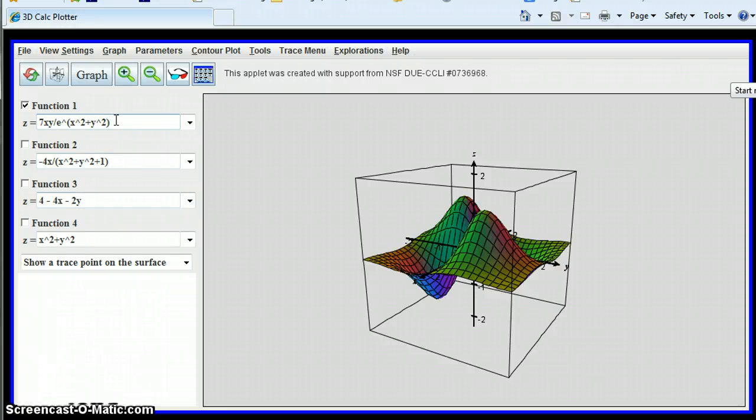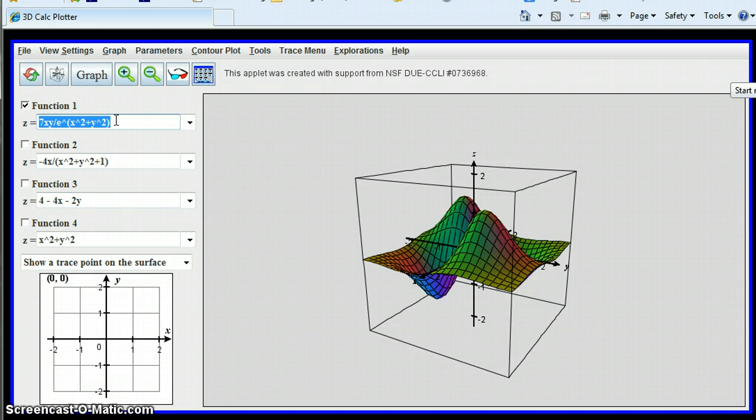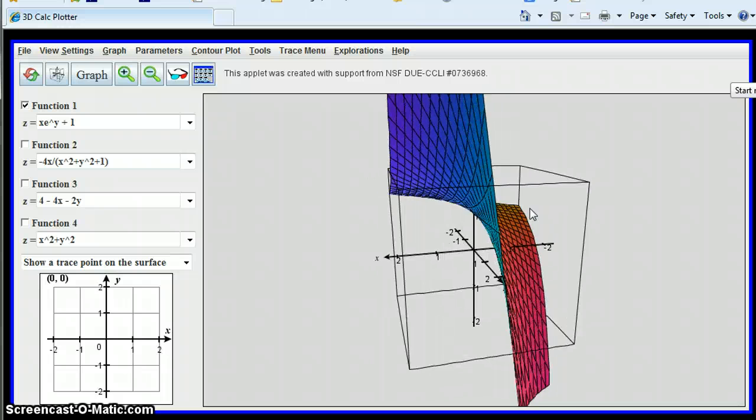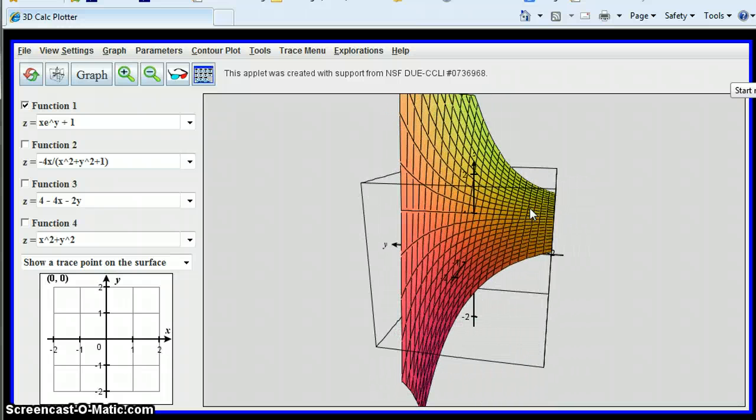Here we are in the applet and let's go ahead and enter the function. So we have x times e to the y plus 1. We graph that. We can sort of see what the surface looks like. We can go around it a little bit. We're interested at the point (1,0). So that should be on here pretty well. Let's go ahead and graph that point.